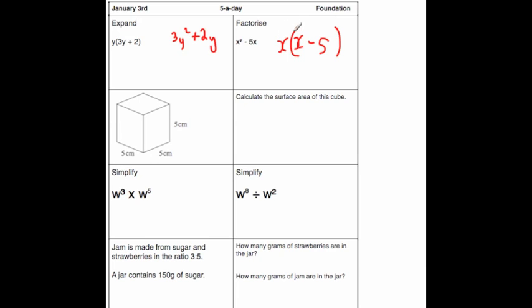And let's just check by expanding it. x times x is x squared, and x times minus 5 is minus 5x.